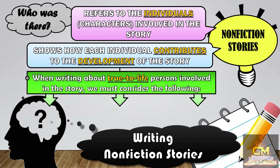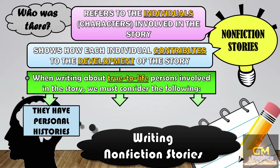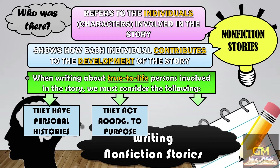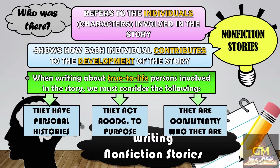When writing about true-to-life persons involved in the story, we must consider the following. First, that they have personal histories — each individual has unique personalities and characteristics influenced by his or her own backgrounds, experiences, and origins. Also, that they act according to purpose — the actions of characters are motivated by their purpose regardless of whether it is fiction or non-fiction. And lastly, that they are consistently who they are — each character is unique and has no similar characteristic with the other persons involved in the story.